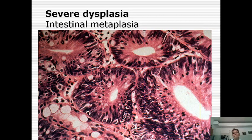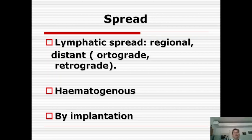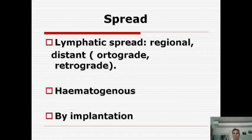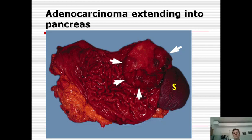In this photo you can see pre-cancerous changes — intestinal metaplasia, severe intestinal metaplasia, severe dysplasia, and formation of cancer. Regarding the spread of gastric cancer: through lymph flow — regional lymph nodes are affected, and distant spread including orthograde and retrograde forms. Virchow's metastasis occurs in the subclavicular lymph node — this is retrograde spreading. Cancer can also spread by implantation into surrounding organs, and we see growth of adenocarcinoma of the stomach into the pancreas and surrounding tissue.